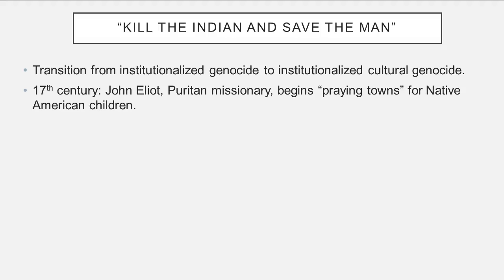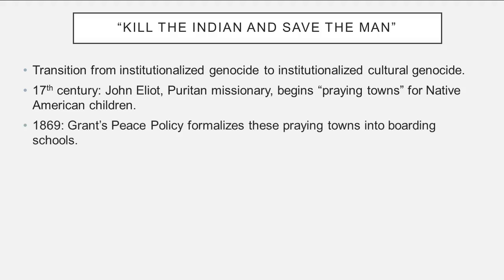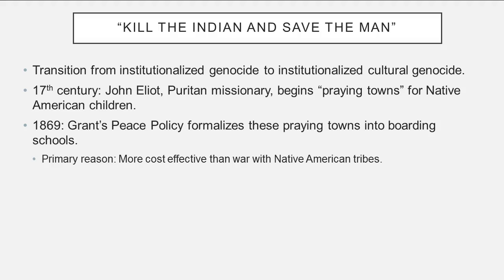In the 17th century, a Puritan missionary named John Elliot began things called 'praying towns' for Native American children, where they would be separated from their parents and indoctrinated into Christianity. The idea was that adults are too set in their ways, so if you start with children, you can change how they think. In 1869, during the Grant administration, the Grant Peace Policy formalized these praying towns programs into boarding schools, considered more cost-effective than war with Native American tribes.